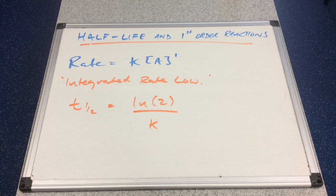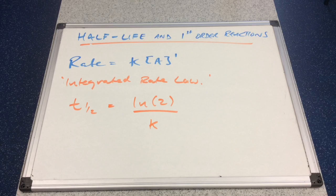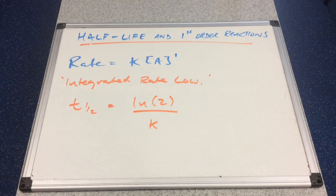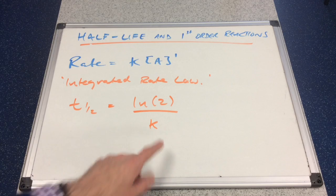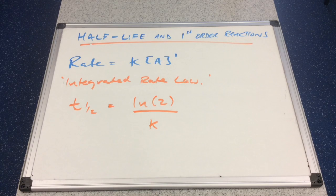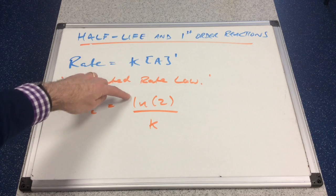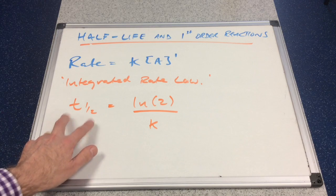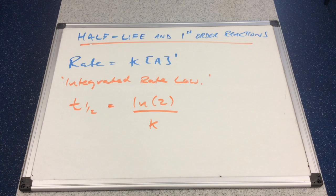You can see that concentration does not feature in this integrated rate law, so that's telling us that the half-life is independent of the concentration. Natural log of 2 is always the same value, and K is a constant, so effectively we have a constant divided by another constant, which is always going to give us the same answer. Therefore the half-life for first-order reactions is constant.